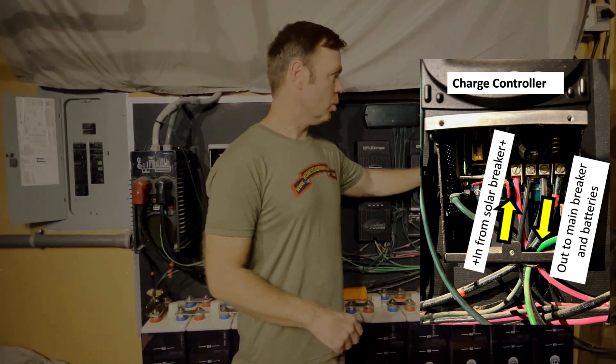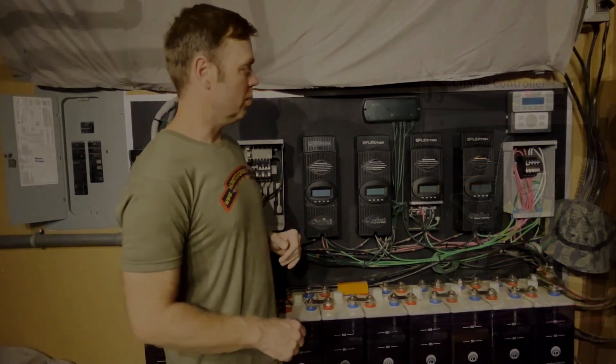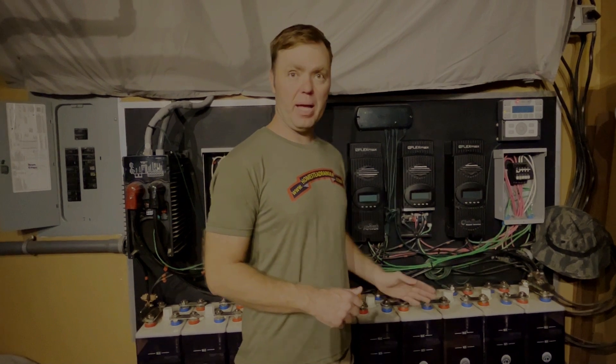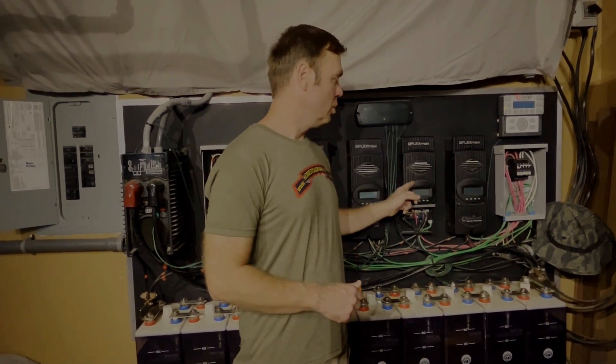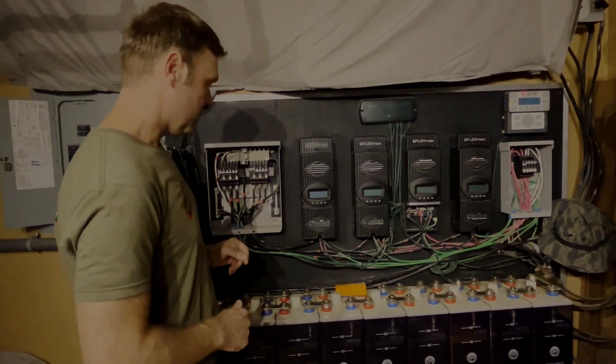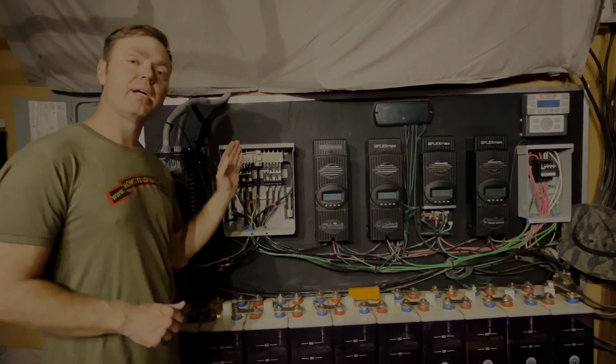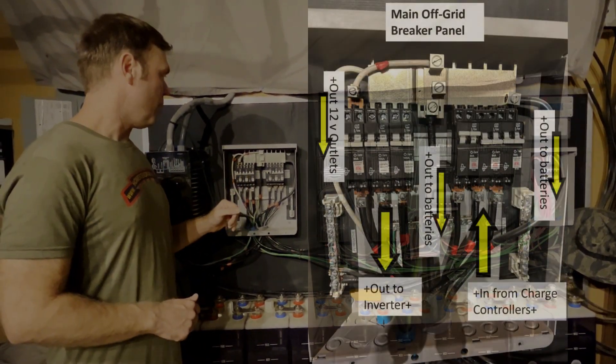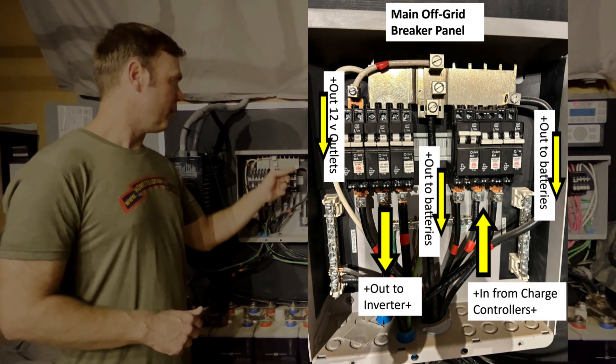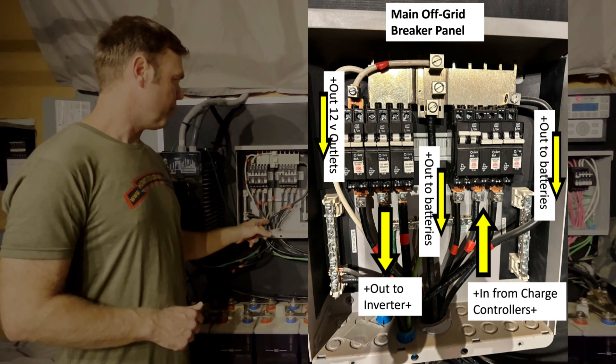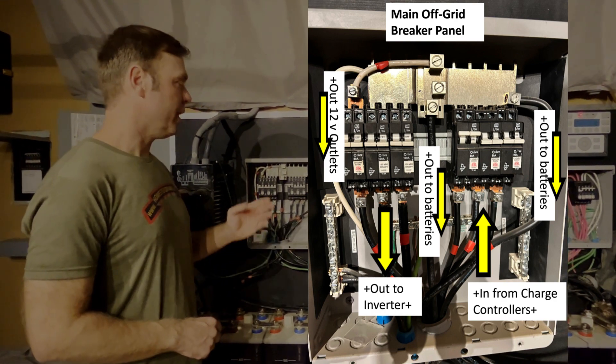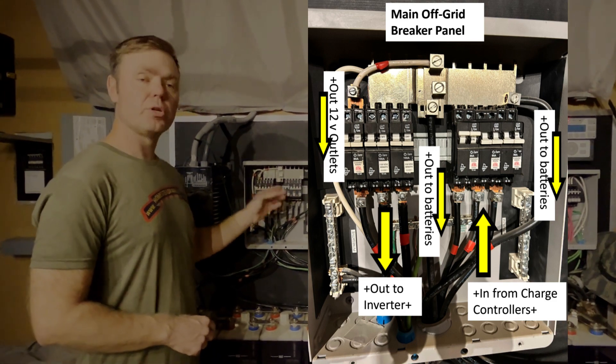After the wires come out of the charge controllers, the negative goes directly to the negative side of our battery bank. The positive goes through the circuit breakers to the charge controller, and then instead of going straight to the positive side of the battery bank, it's going to come over here to the master breaker box. The positives come in and get combined at this top combining plate, and then they go through a bigger wire. In this case, we're using a two-gauge wire, and that goes to our battery bank to charge our battery bank.